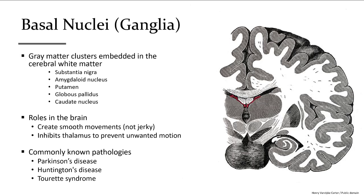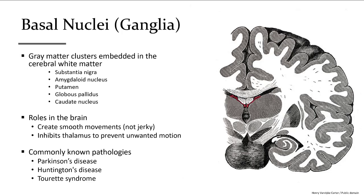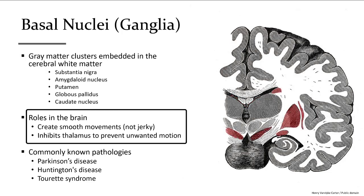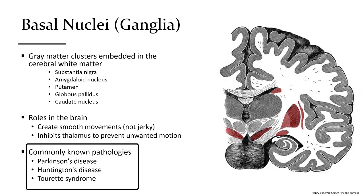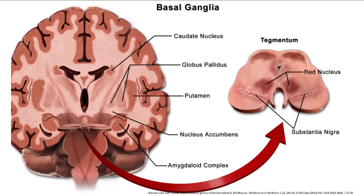The basal ganglia are collectively known as clusters of gray matter embedded in the subcortical white matter. These gray matter islands work together with motor pathways to elicit smooth movements. Pathologies associated with damage to these regions include symptoms of uncontrolled movements such as tremors, visible in these distinctive gray matter regions of the basal ganglia in the unstained image of the brain.